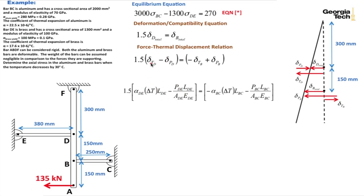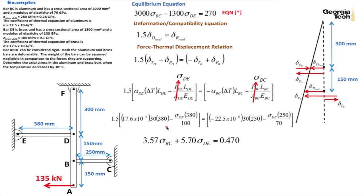I can substitute now in my values for my deformation for temperature change, which is the strain due to temperature change times the length and the deformation due to the normal force, which is PL over AE. On this side, I have for the bar DE. On the right hand side, I have for the bar BC. I can reduce this. I see that P over A for bar DE is the stress in bar DE. Similarly, the P over A for bar BC is the stress in bar BC. I can calculate this out and I get another equation now, which we're going to call equation double star, that is an expression for the axial stresses in the aluminum and the brass bars.